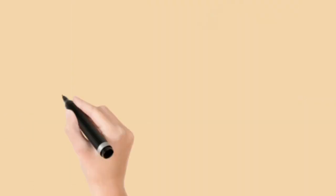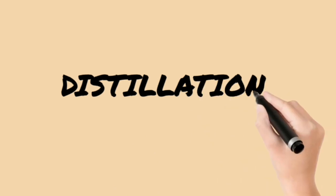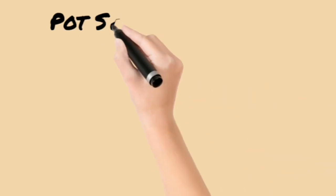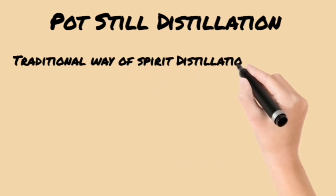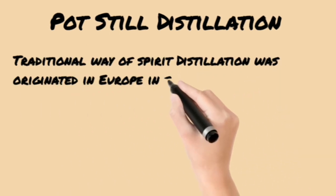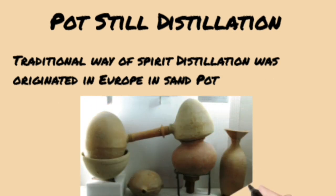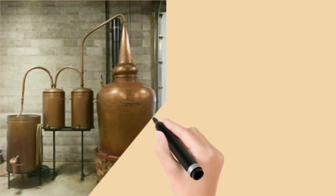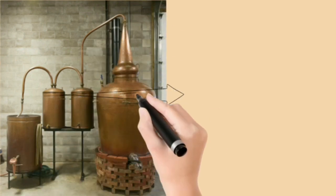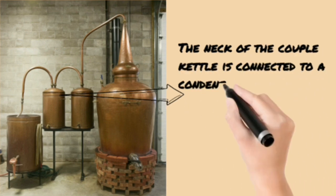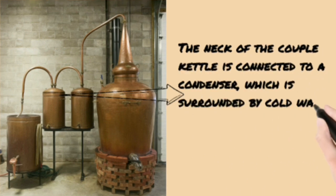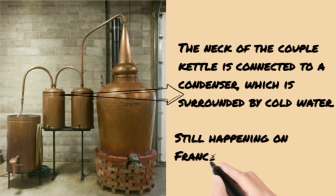There are two types of distillation. The first is pot still distillation — the traditional way of spirit distillation, which originated in Europe using sand pots. Later, copper pots were used, since copper is an excellent conductor of heat, resistant to acid, and removes unwanted sulfides. The neck of the copper kettle is connected to a condenser surrounded by cold water. Ancient-style pot still distillation is still practiced in France and Scotland.